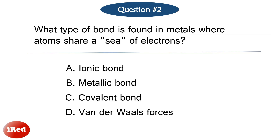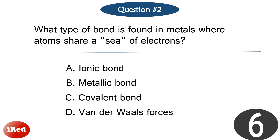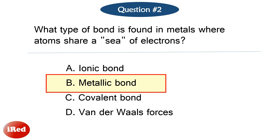Question number 2. What type of bond is found in metals where atoms share a sea of electrons? The correct answer is letter B, metallic bond.